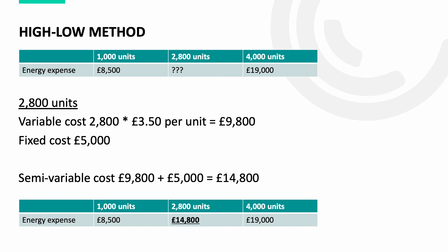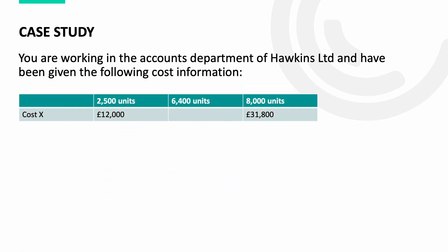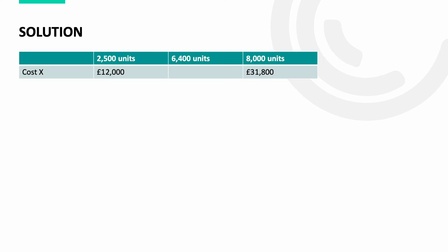Let's now put this into a quick case study. You are working in the accounts department of Hawkins Limited and have been given the following cost information: Cost X at 2,500 units is £12,000 and at 8,000 units is £31,800. Calculate Cost X for 6,400 units.